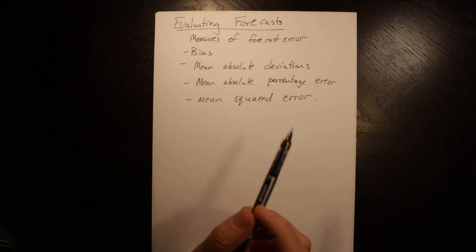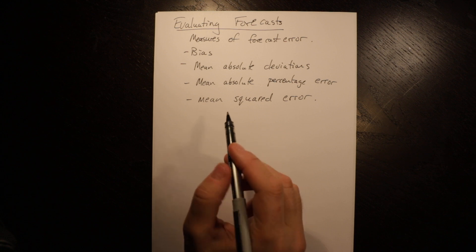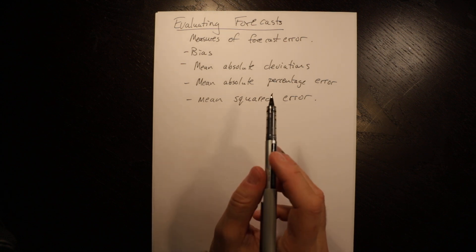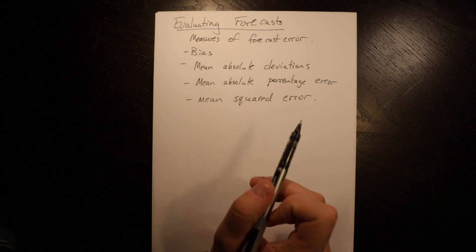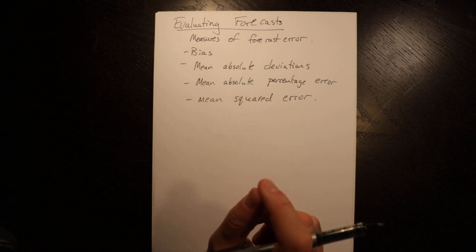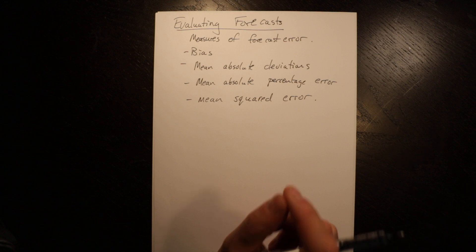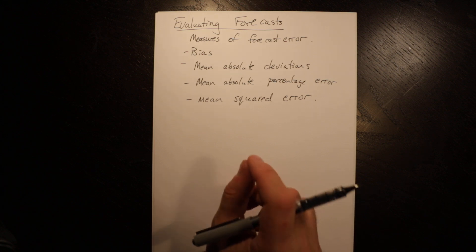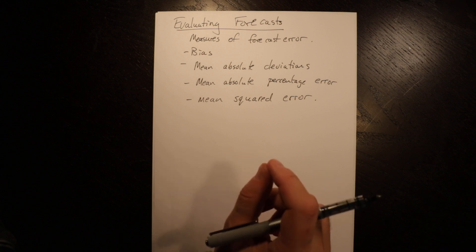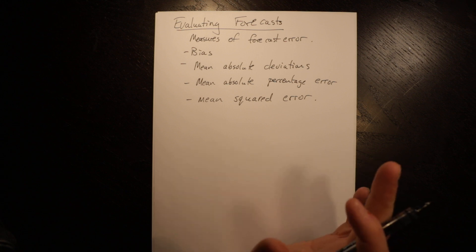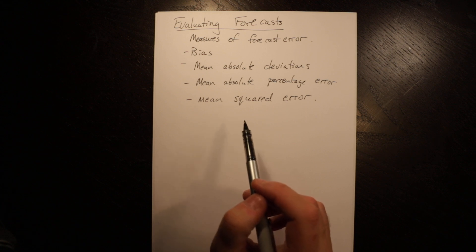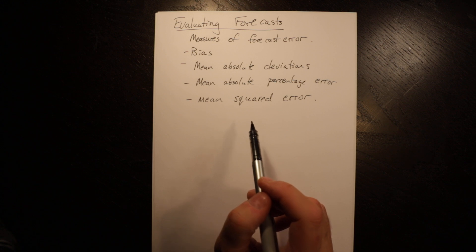This is the last of my forecasting videos where I go through some examples. In this one we're going to talk about evaluating forecasts. We're going to talk about measures of forecast error, which allow us to compare different forecasting approaches and say which one of them, in hindsight, seems to be working better to give us a sense of which ones we should use in the future.